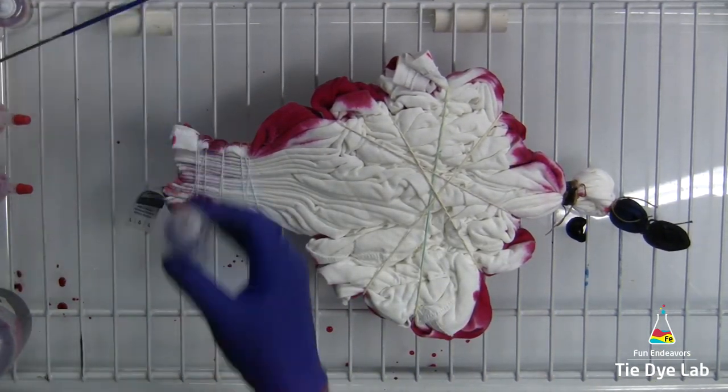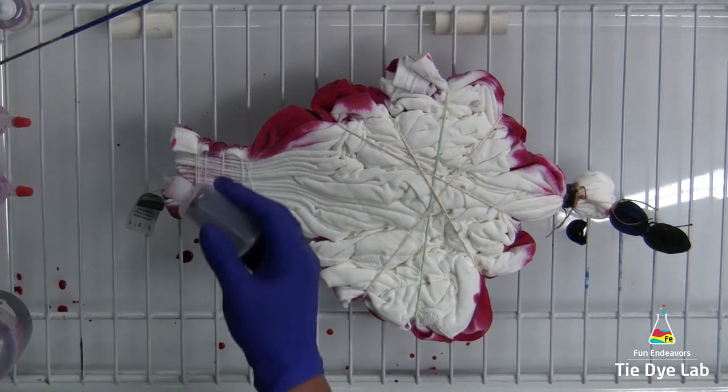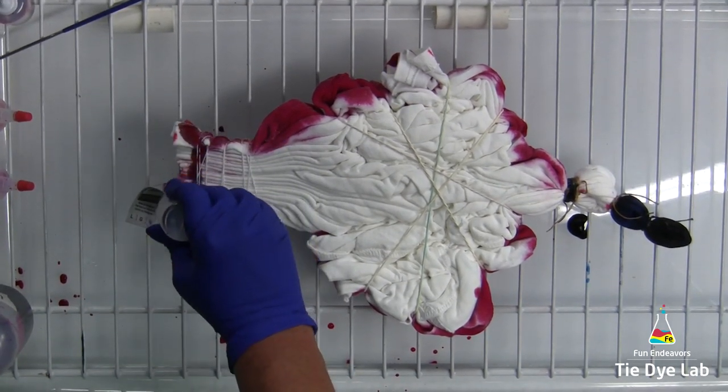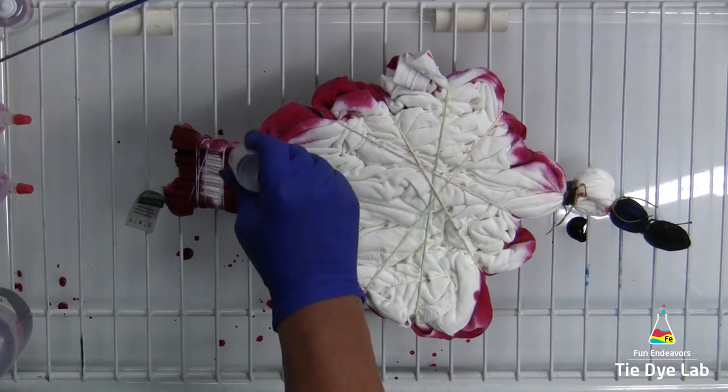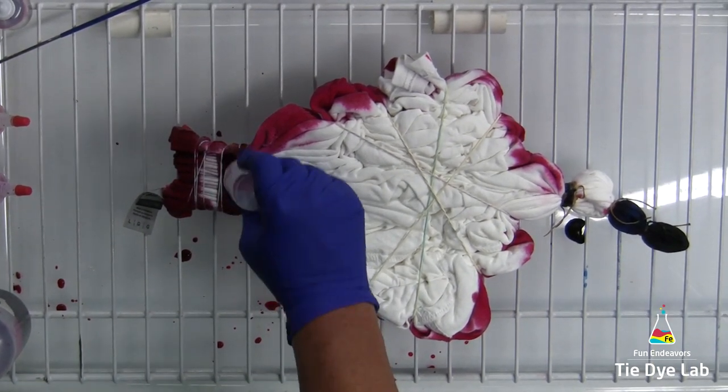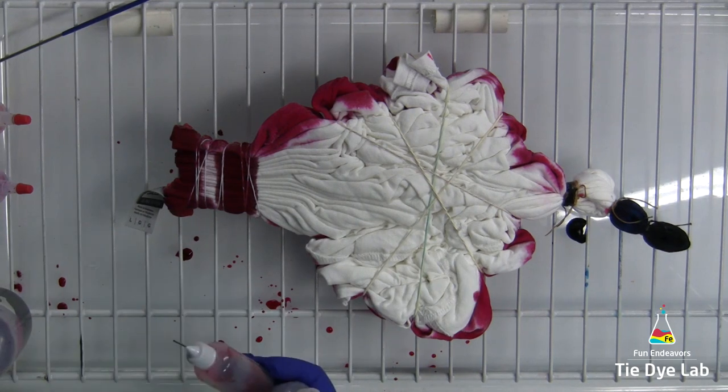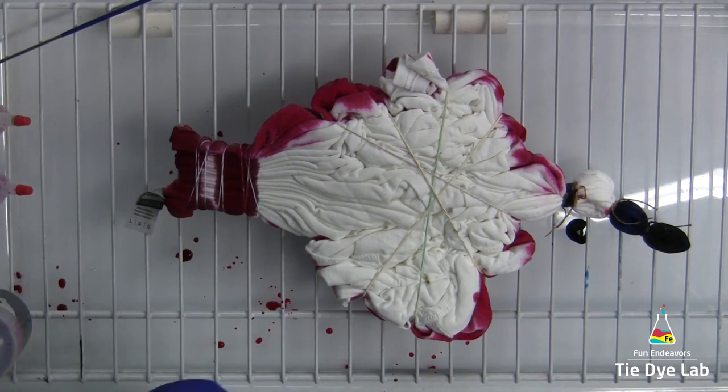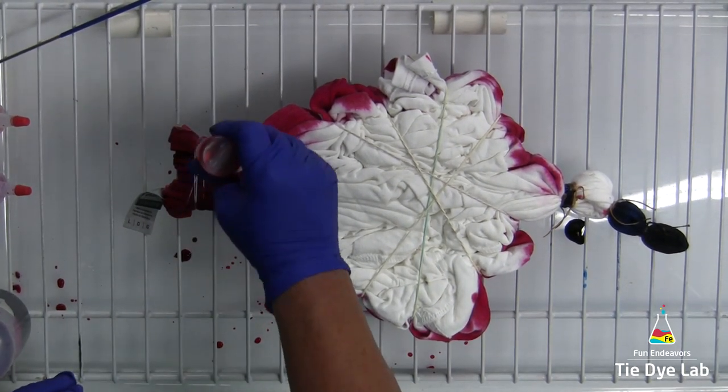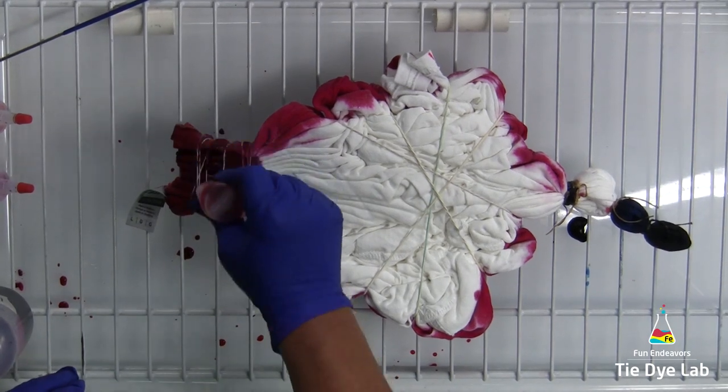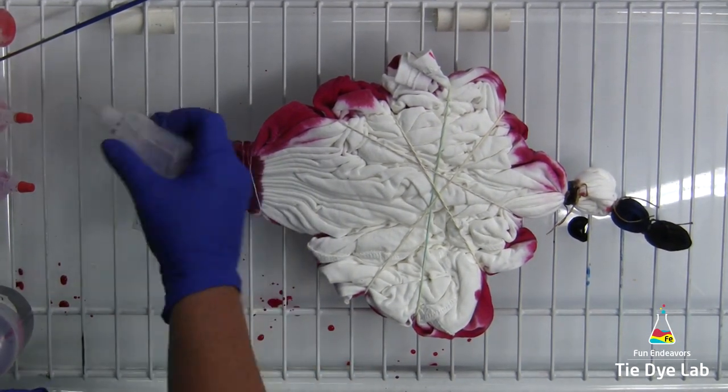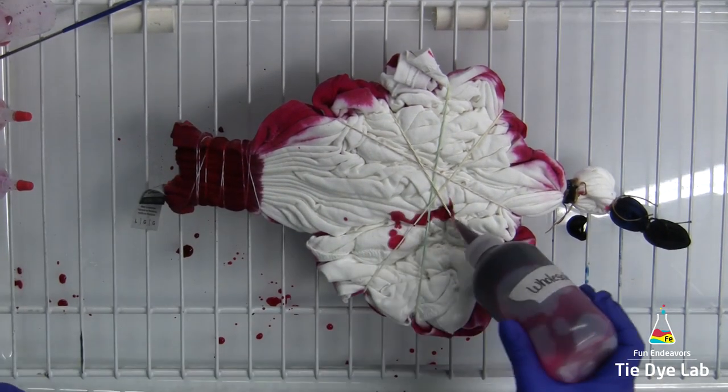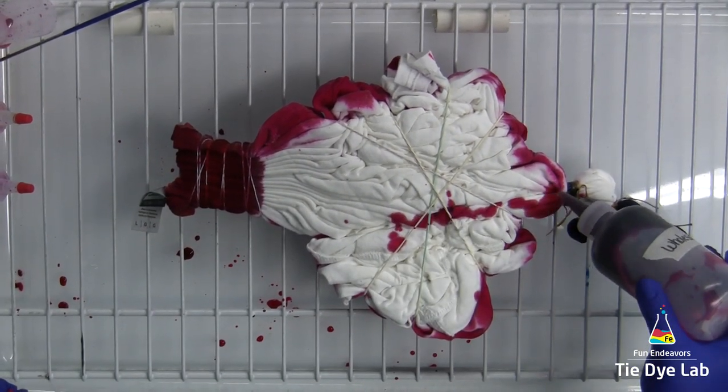Now I'm going to turn my shirt over and then on the fan fold portion, I'm going to do the opposite of what I did on the front side. I'm going to put the fuchsia, then the red, then another line of fuchsia. So I'm basically going to offset that area. Then I'm going to dye the rest with Wholesale Pink.